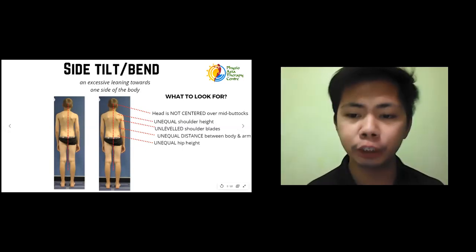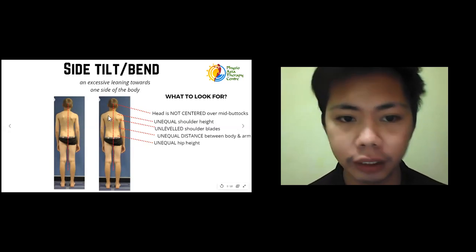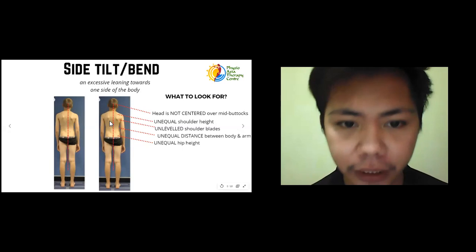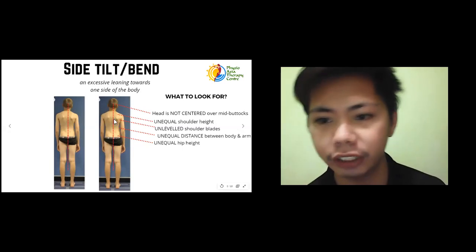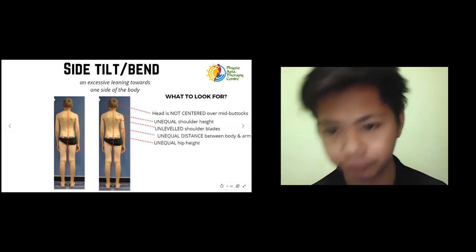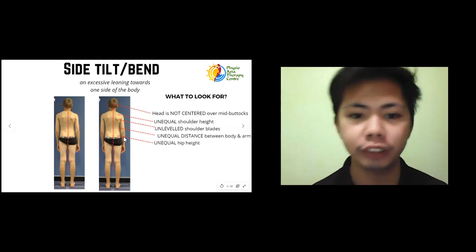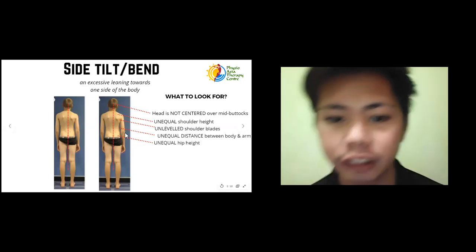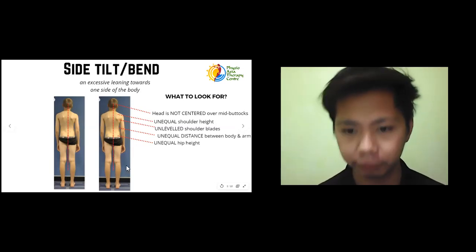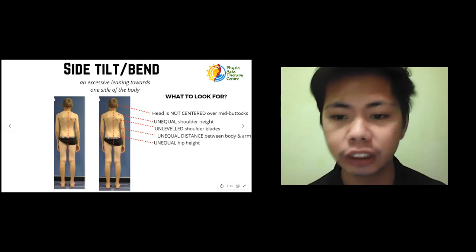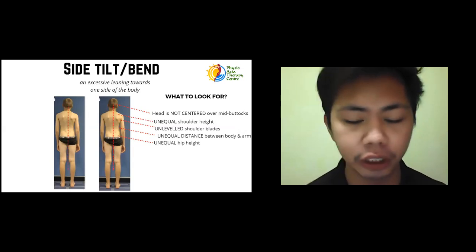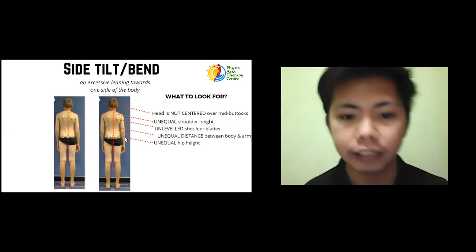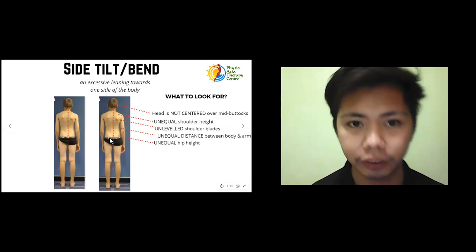Next, we check shoulder height — they should be equal, but in this case the left shoulder is higher than the right. We can also see that the left shoulder blade is higher than the right, which is another positive sign for side tilt. The distance between the body and the arms should also be equal; here the right arm is closer to the body than the left. Lastly, we check hip height using the abdominal fold and the top of the pelvis — in this case, the right hip is higher than the left. This is commonly seen in those with scoliosis.